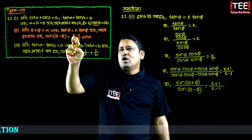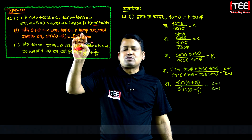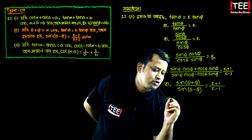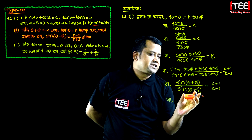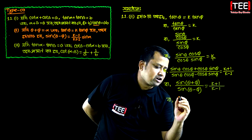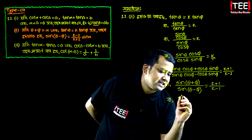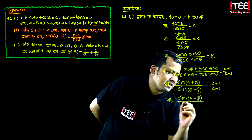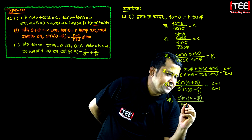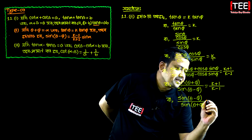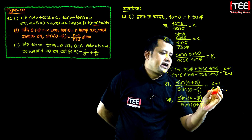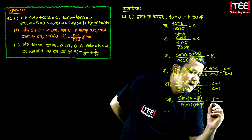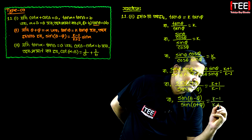आमार प्रमाने किन्तु k minus 1 उपुरे आसे। तावले, आमरा, एकुन, बईस्तो करों — तो आमरा बईस्तो करों करी। निसेट्टा उपुरा दिवो, उफुरत्टा निसे लिगबो — तावले, लिगबो: sin(theta minus phi) भाग sin(theta plus phi), by 0.06 — minus 1 plus k plus 1.